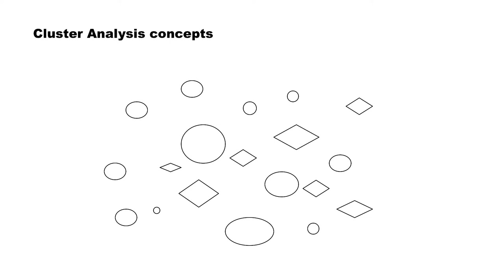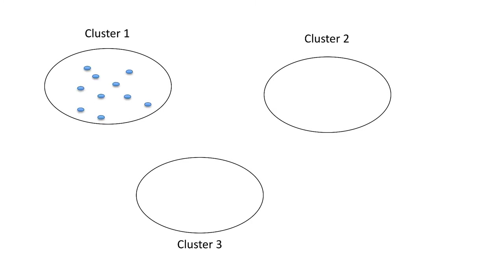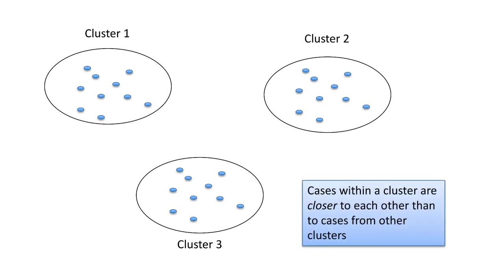To make things more explicit: we are given a set of objects and we want to divide them up into some number of clusters — in this example, three clusters. We want to put objects into each of these clusters such that the cases within a cluster are closer to each other than cases from other clusters. By closer, we mean more similar to each other, like circles being more similar to circles than to diamonds.